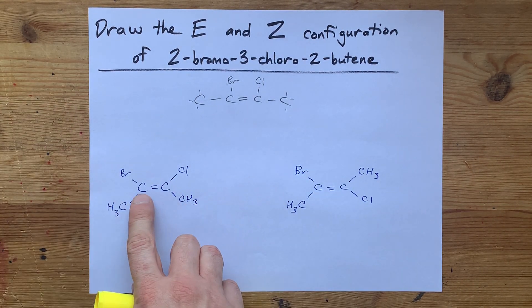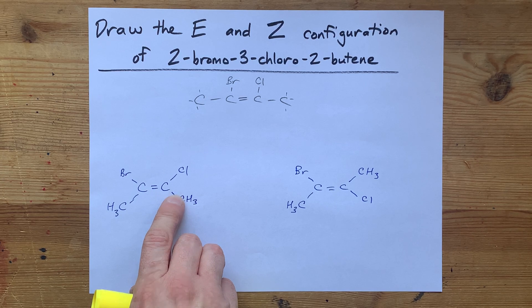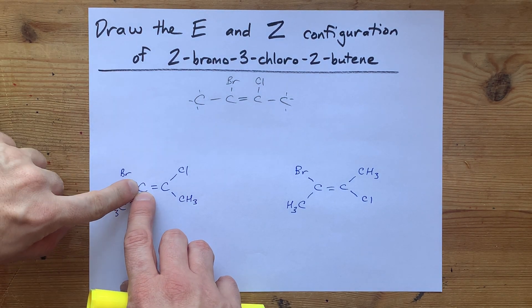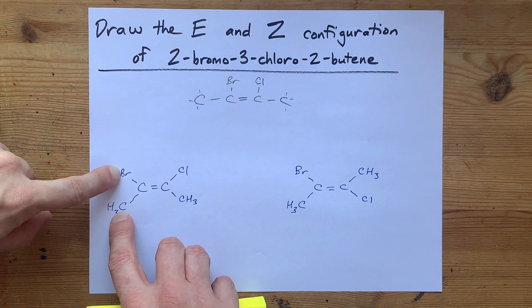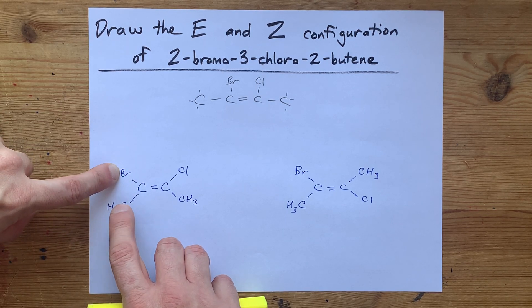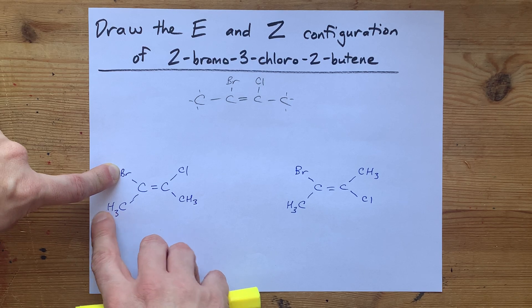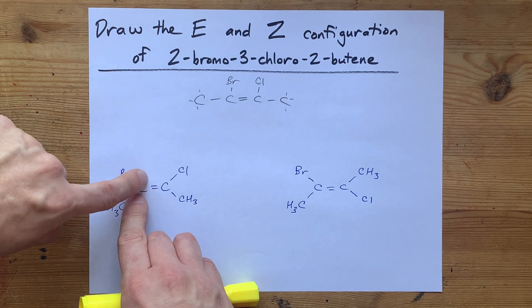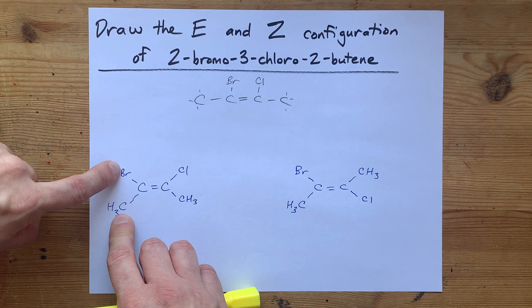Your job is to look at the branch points across the double bond. Here's a carbon. And then you go one atom in either direction, like down the branches. It's Br versus carbon. I don't care what else is connected to the carbon yet. What matters is the very first atom in the branch, compare those two.